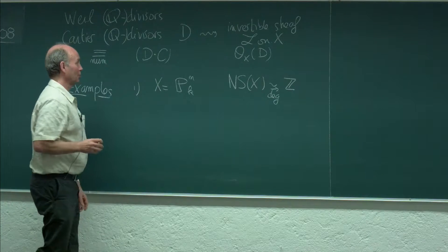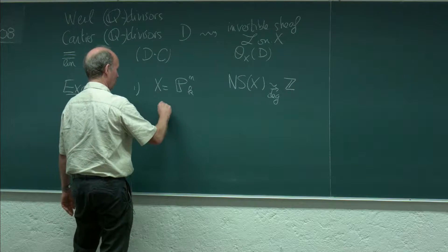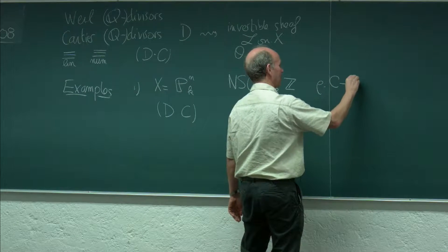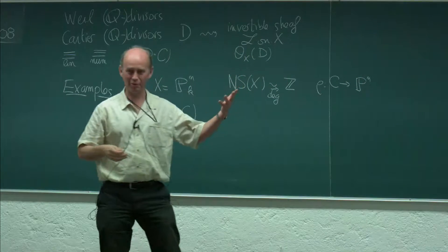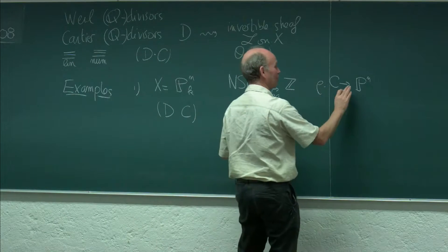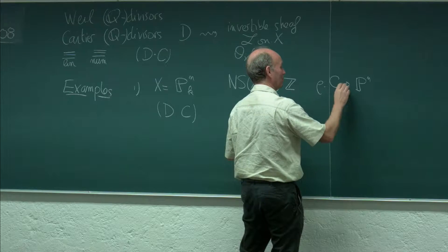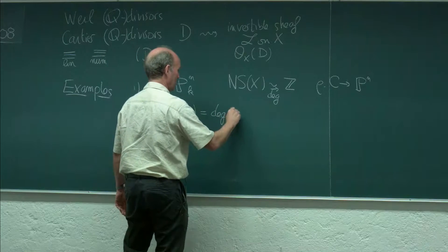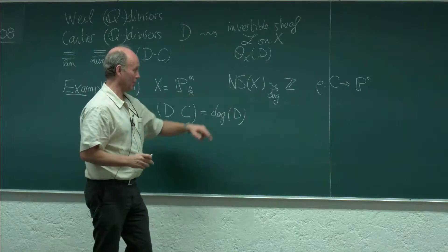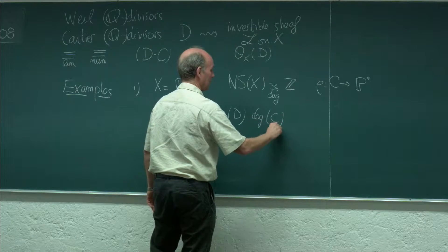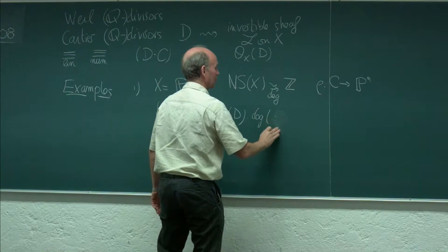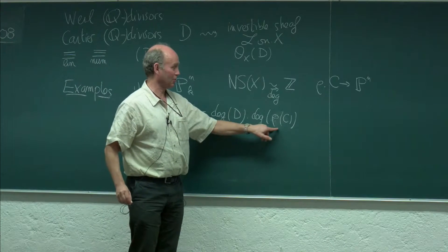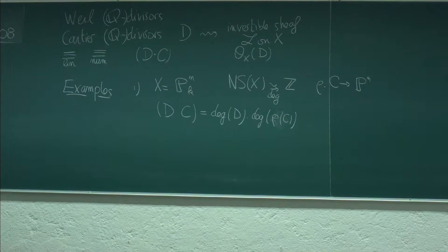The intersection product, where C is a curve in P^N, is simply the product of the degrees. Thinking of C as embedded in P^N, or at least birational onto its image, this intersection product is the degree of D times the degree of C (or the degree of ρ(C) to be more precise). This is the degree as a curve in P^N as defined in the first chapter of Hartshorne, for example.